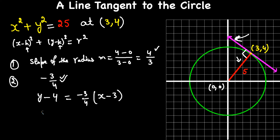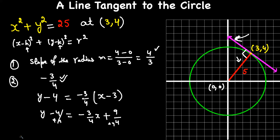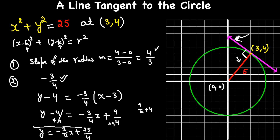Simplifying the right-hand side: y - 4 = -3/4 · x + 9/4. Adding 4 to both sides — note that 4 = 16/4 — we get y = -3/4 · x + 9/4 + 16/4, which equals y = -3/4 · x + 25/4. This is the equation of the tangent line.